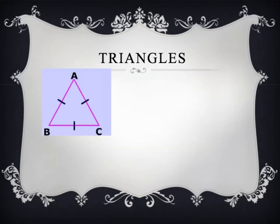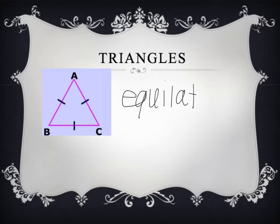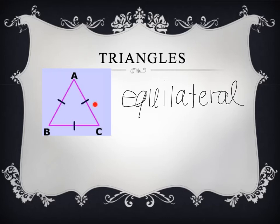Now that we know a little bit about angles, we can talk about triangles. Triangles have three different classifications, and the different classifications rely on the sides and the angles. This first triangle that we have here is an equilateral triangle. This is called an equilateral triangle because you can notice the little tick marks right here on the triangle — all of the sides are the same length. They are congruent, and all of the angle measurements are the same. So it's all equal — equilateral.